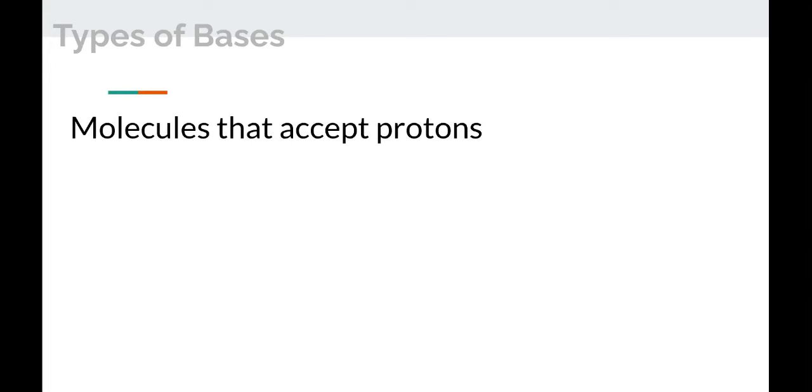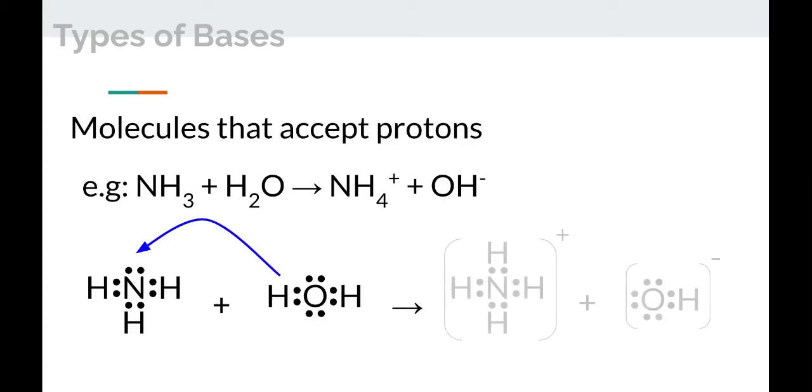Another type of base are some molecules that are good at accepting protons. The classic one is ammonia, NH3. If you put ammonia together with water, it will accept the proton from the water and that results in ammonium ion. So the ammonia didn't get any more electrons, but it did get a proton. So that makes it positively charged now. And then the water kept the electron that was originally part of that hydrogen, and so that gives that OH coupling an extra electron. So that makes it an anion.